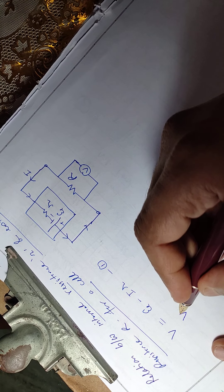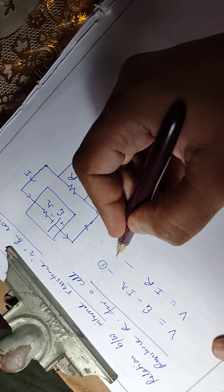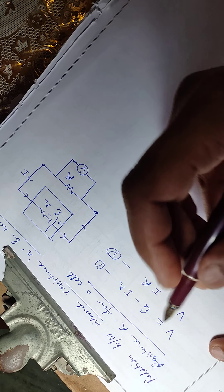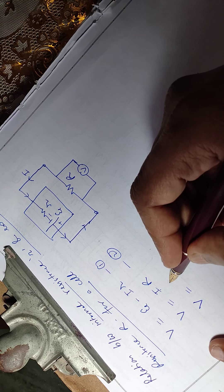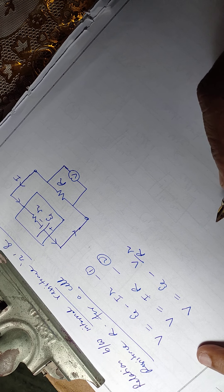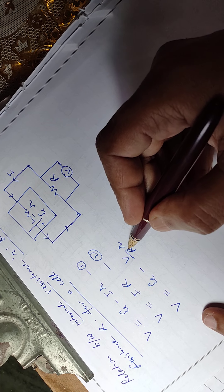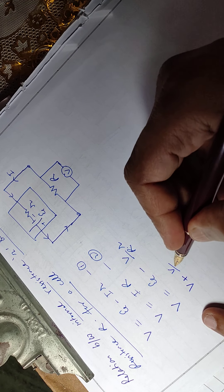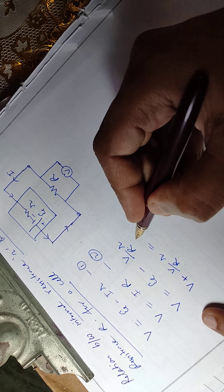For this resistance, V is equal to IR. Now I put the value of I from equation 2 in equation 1. What we get: V is equal to xi minus V by R into small r. Now bring this to the left side, which is equal to xi.